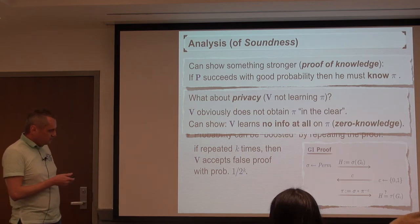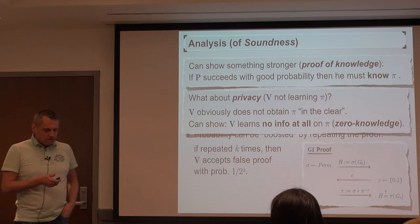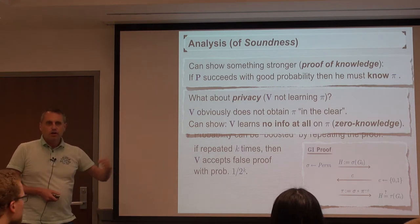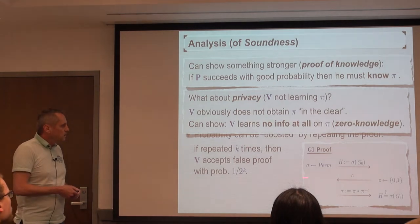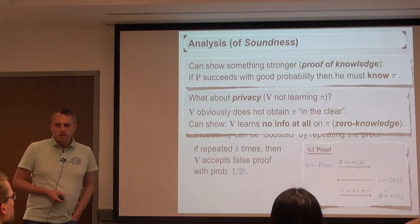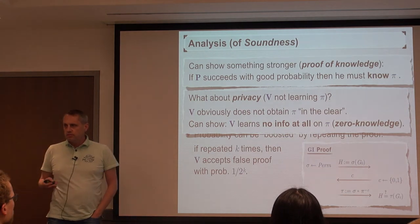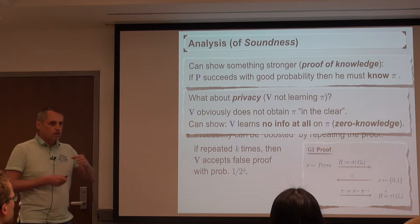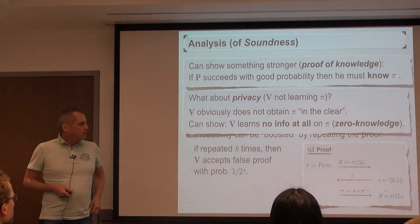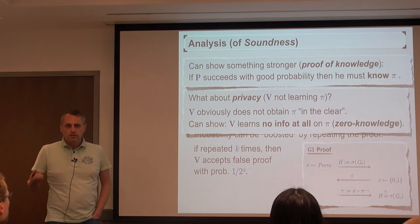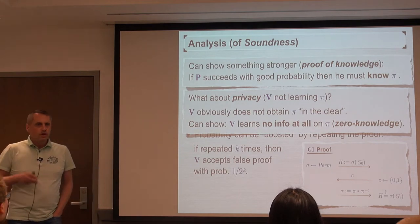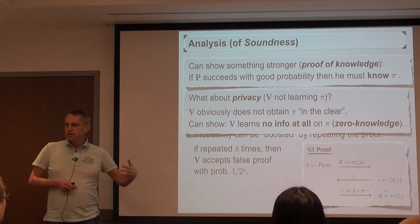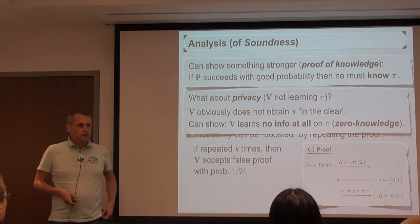What makes an interactive proof a sigma protocol is this three-move structure with the second message being a randomly chosen challenge. From now on, I'll always assume that the challenge is chosen from a large space — a random bit string — to ensure negligible soundness error. This can always be achieved by repeating the protocol in parallel several times.